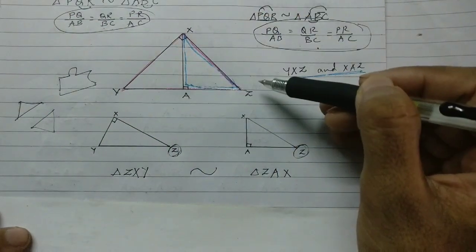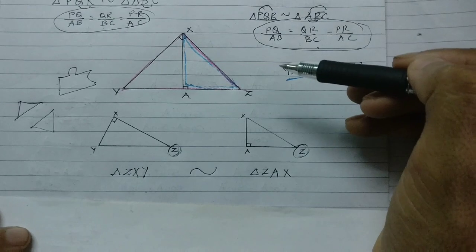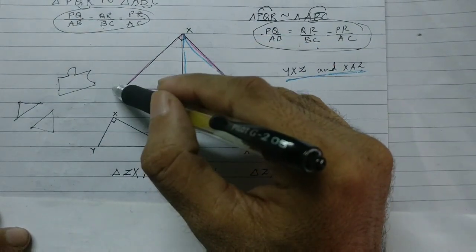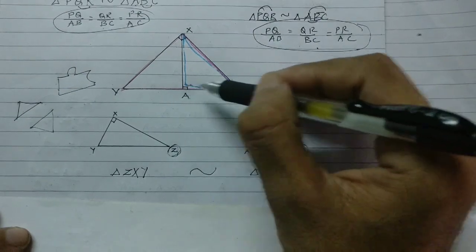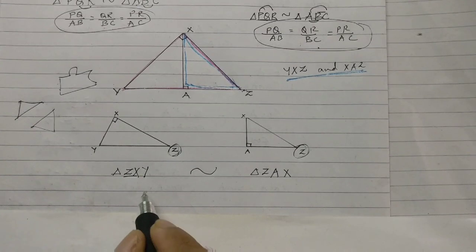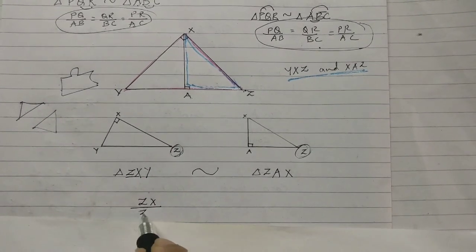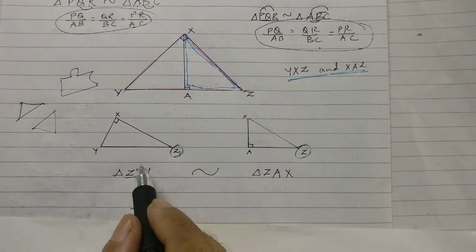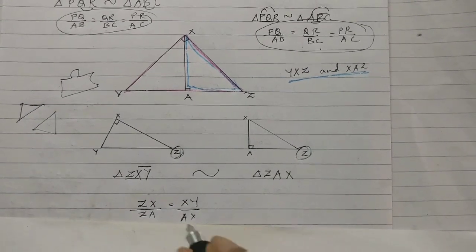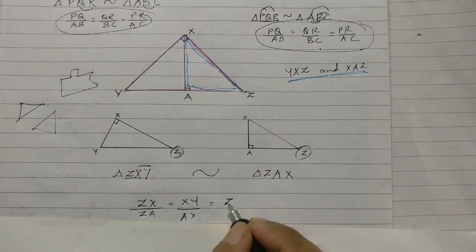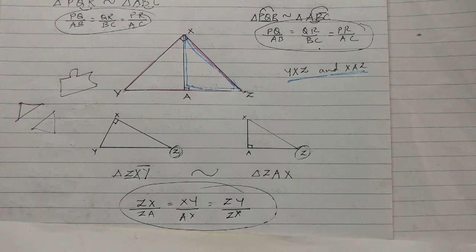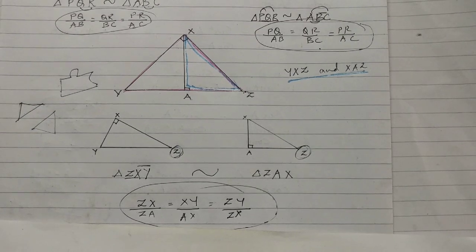So if I write it directly: the pink and blue triangles — I start with the common point Z, then go to the 90-degree angle, giving triangle ZXY for the bigger triangle, and triangle ZAX for the smaller one. Once written in proper form, the ratios are easy: ZX upon ZA equals XY upon AX equals ZY upon ZX. That's how you write the ratios.